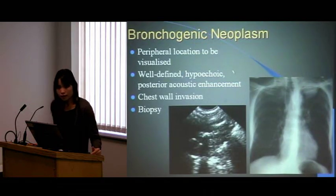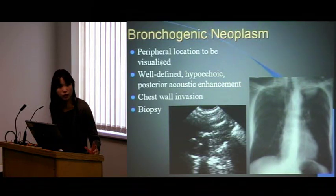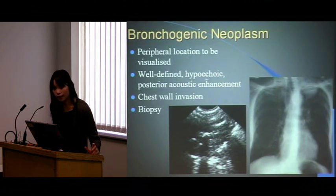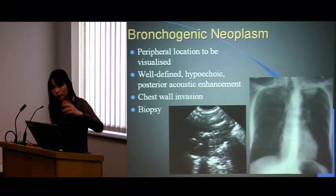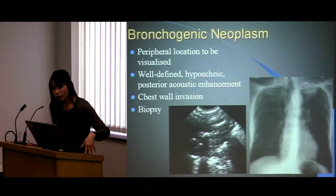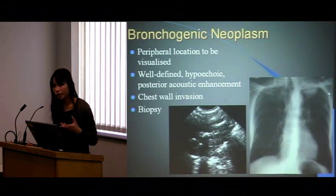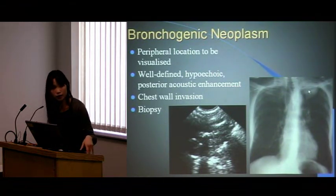For lung cancer, it has to be quite peripheral to be visualized. It appears as a well-defined hypoechoic lesion with some posterior enhancement. This sort of peripheral location is probably amenable to biopsy, but you'd want it slightly bigger to stop your needle from puncturing the pleura and causing a pneumothorax.